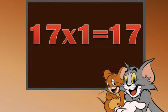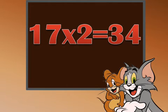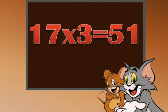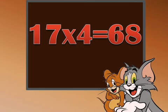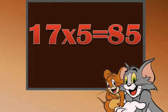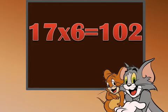17 ones are 17. 17 twos are 34. 17 threes are 51. 17 fours are 68. 17 fives are 85. 17 sixes are 102.